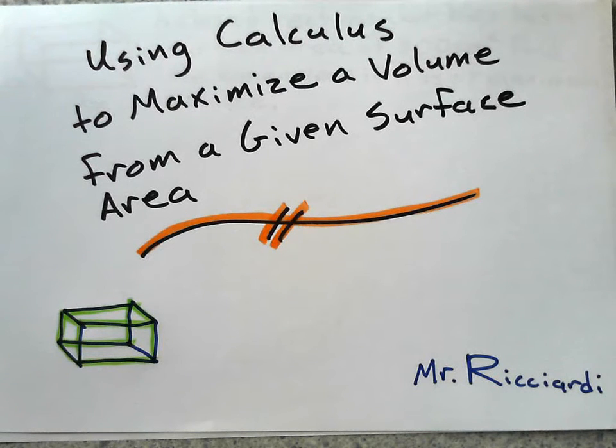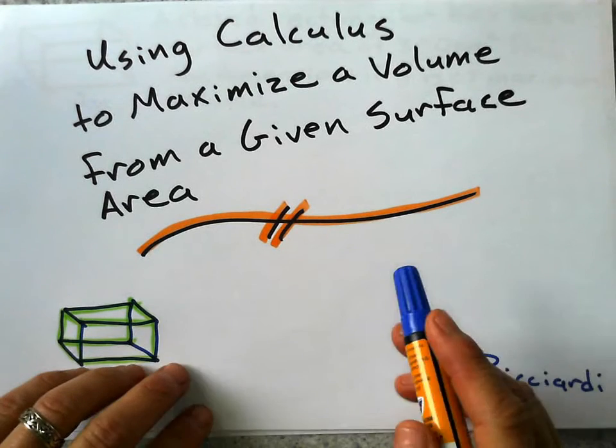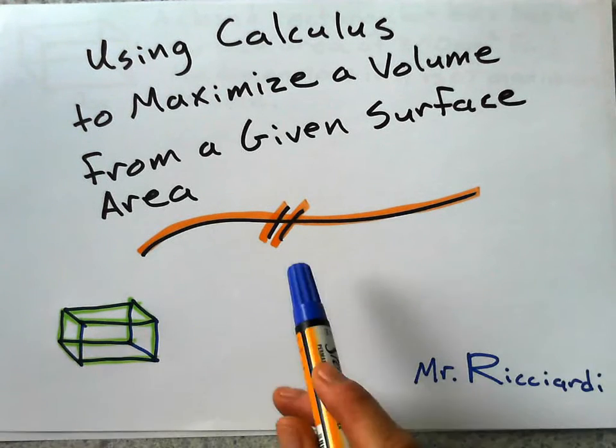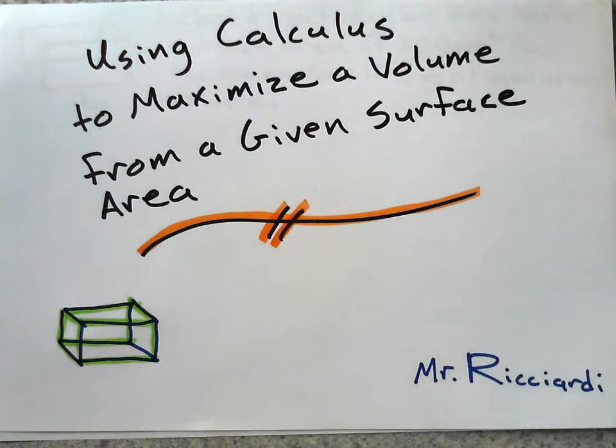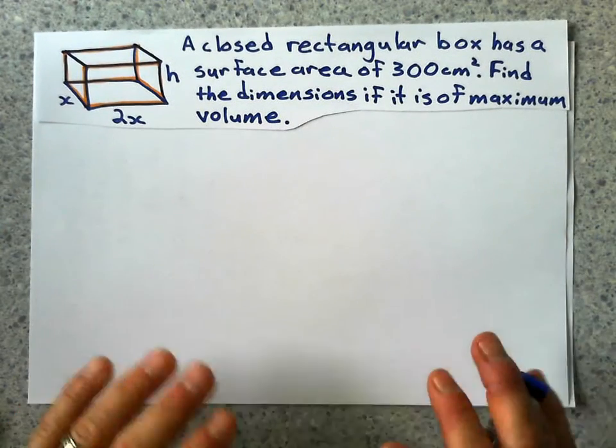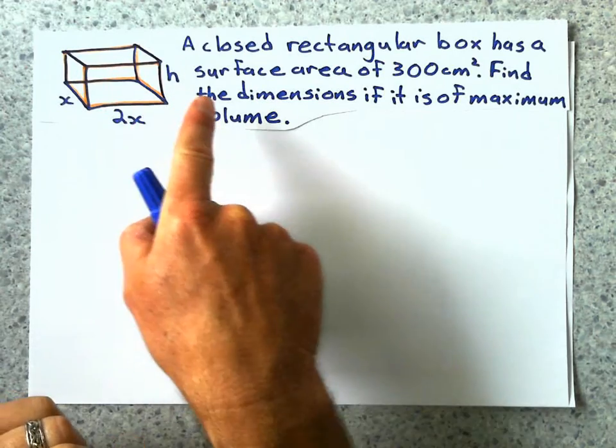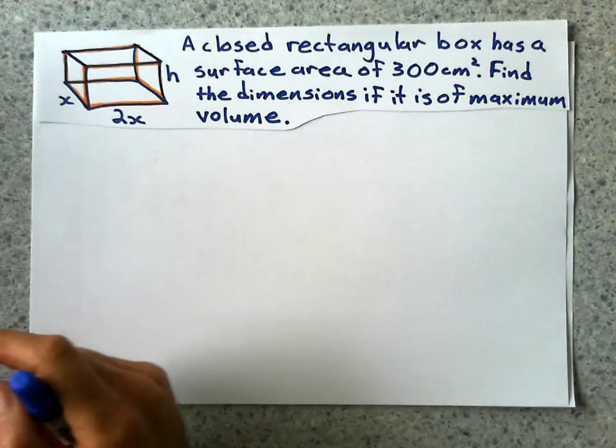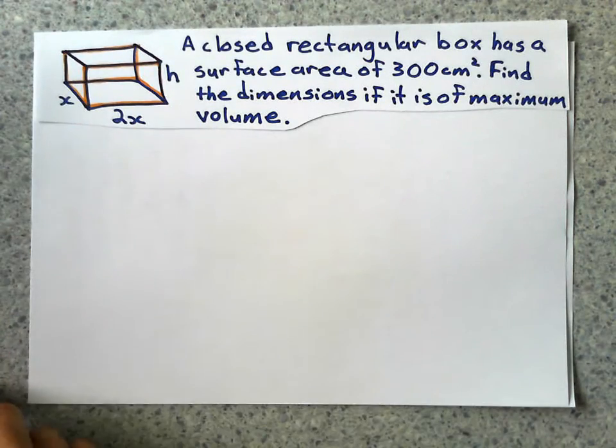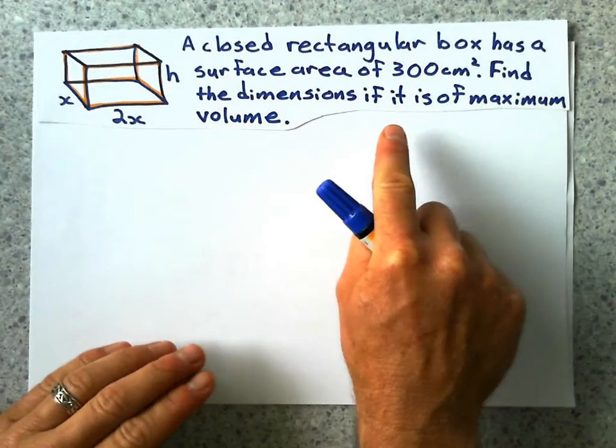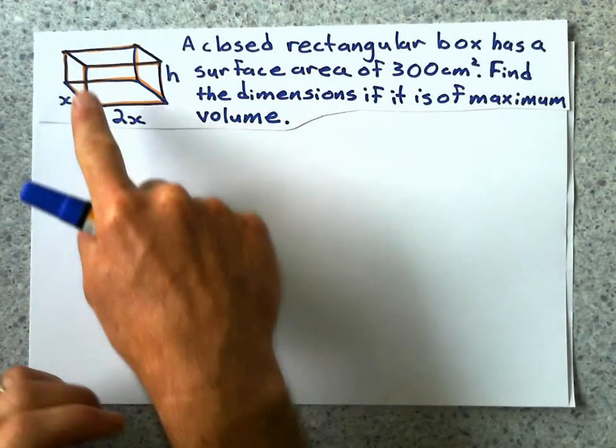All right, hello there. I'll show you how to use calculus to maximize the volume from a given surface area with a rectangular box, and let's look at the problem here. Let's say we have a closed rectangular box, and it has a surface area of 300 square centimeters, and we want to find the dimensions if it is of maximum volume.